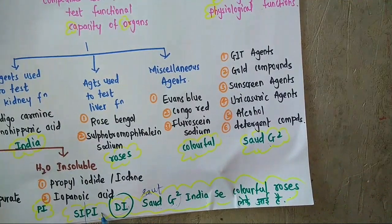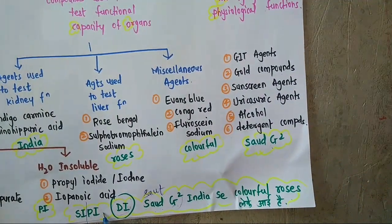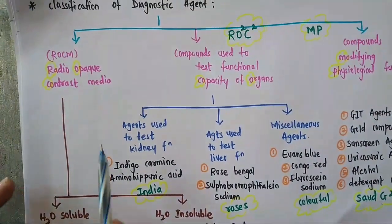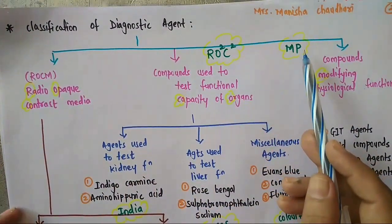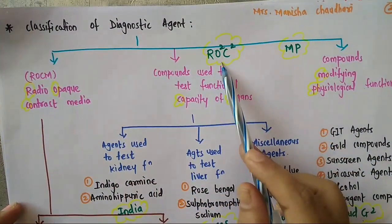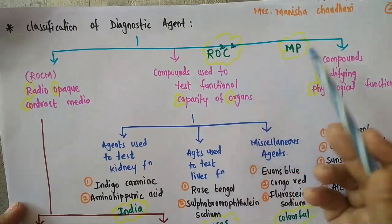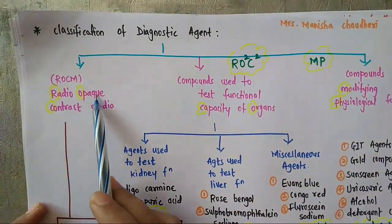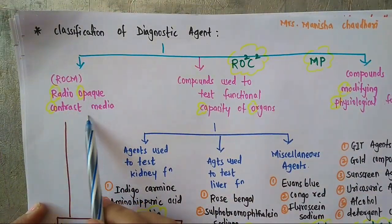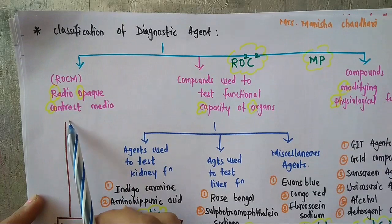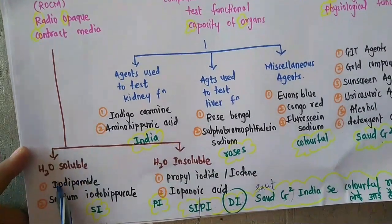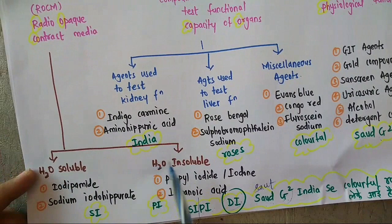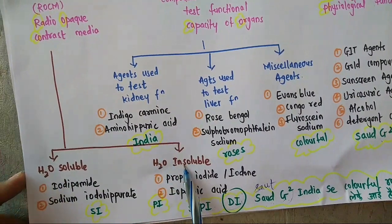Now 'Sippi' — we need to see whose sub-classification it is. The first class was MP ROC. In ROC — Radio Opaque Contrast Media — it is further subdivided into two classes: water soluble and water insoluble.